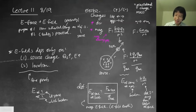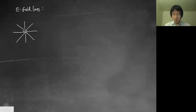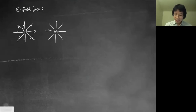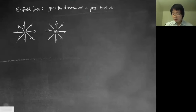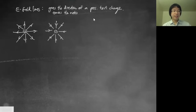For direction, we use electric field lines. For a positive point charge, field lines point outward radially. For a negative point charge, field lines point inward. The arrows give the direction of motion of a positive test charge — these lines trace the motion of a positive test charge.